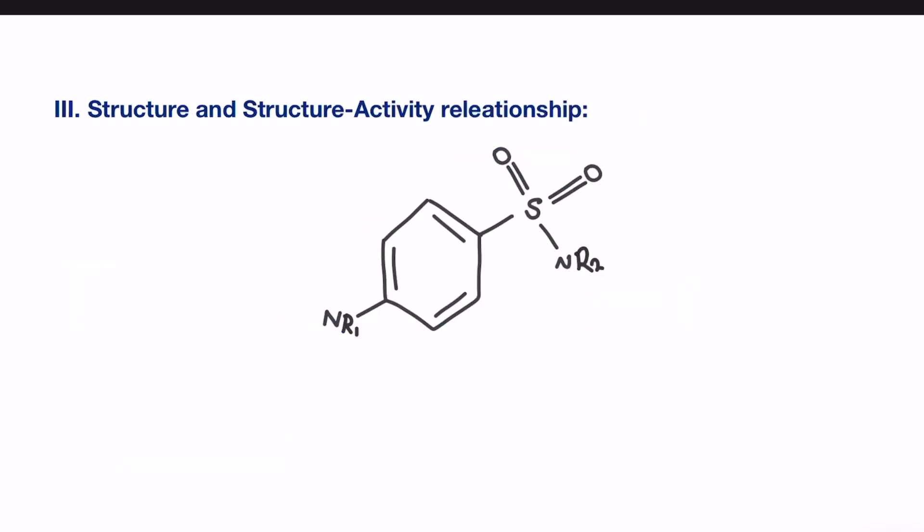Moving forward to the structure and structure-activity relationship of this class. As shown, the general structure of sulfonamides have three main parts. First, the amino group, so an amine, also an aromatic ring and sulfonamide functional group.